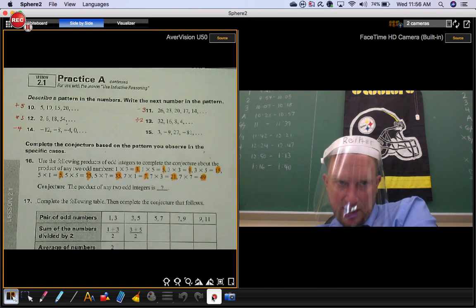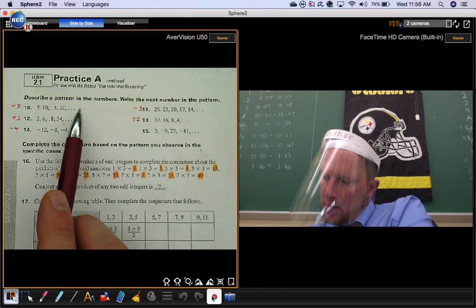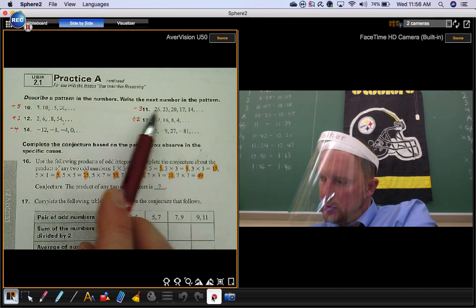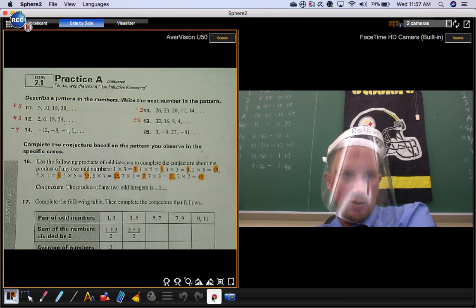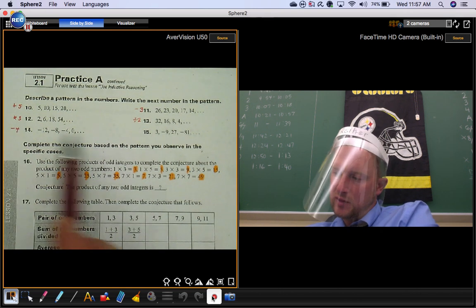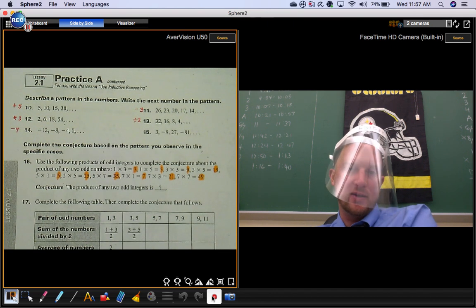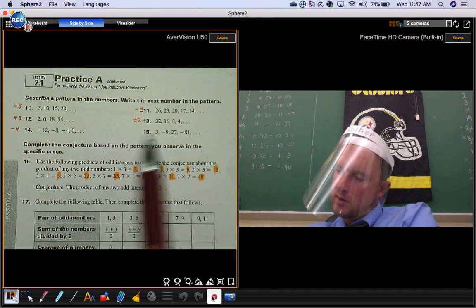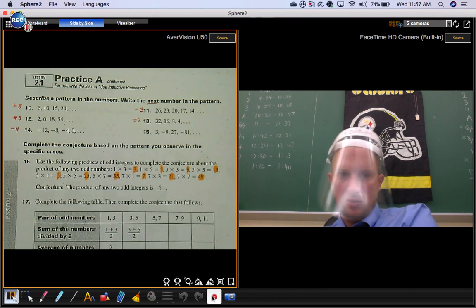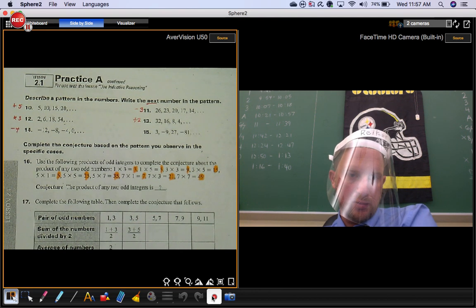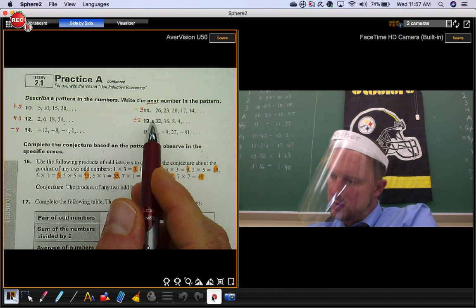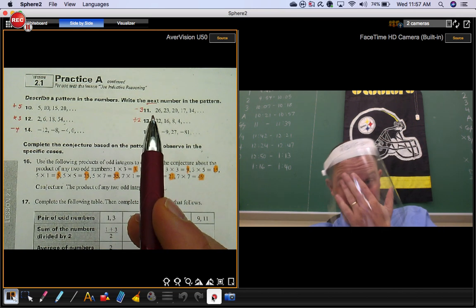This is the back of the worksheet. They want you to describe a pattern in the numbers. Write the next number in the pattern. So make sure you use inductive reasoning to say what the pattern is. And then you're just finding the next number in each pattern. So these first five aren't that difficult.